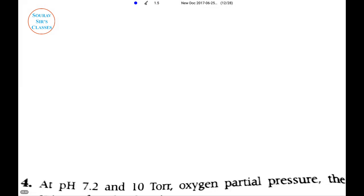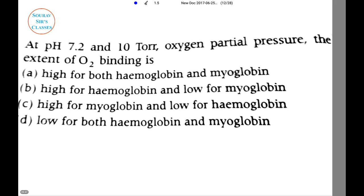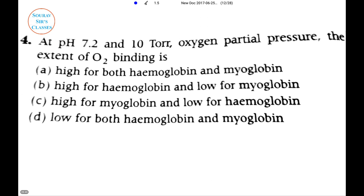Now we will proceed to the next question. In this question at pH 7.2 and 10 torr oxygen partial pressure, the extent of O2 binding is - they've given options: high for both hemoglobin and myoglobin, high for hemoglobin and low for myoglobin, high for myoglobin and low for hemoglobin, or low for both.